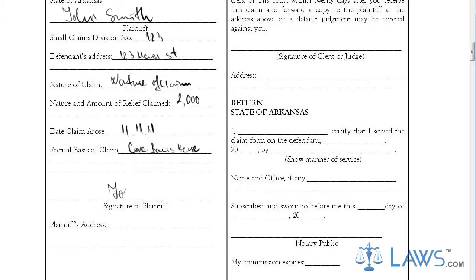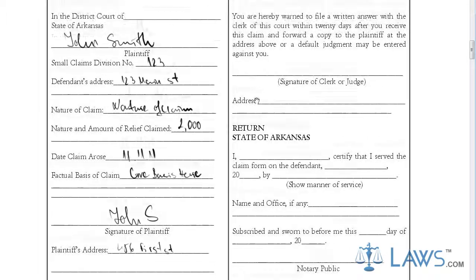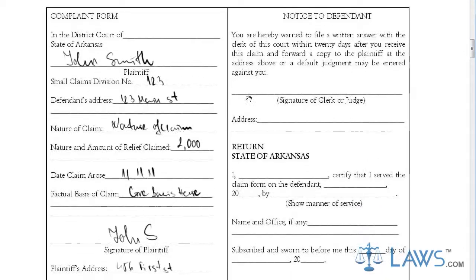Provide your signature and address at the bottom of the complaint form and submit your complaint to the court. After your complaint is submitted, the judge will certify the complaint and it will be sent to the defending parties. Once the defending parties receive notice of the lawsuit and provide an answer, a court date will be given and the case will begin.